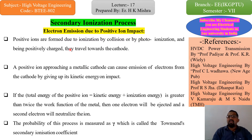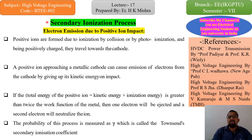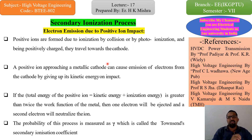Generally, I will discuss this in three parts across three slides. There are three different types that cause the secondary ionization process in the case of gaseous dielectrics. First is electron emission due to positive ion impact. We will discuss first how electrons are emitted due to the impact of positive ions in secondary ionization.